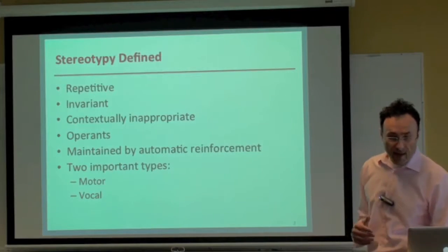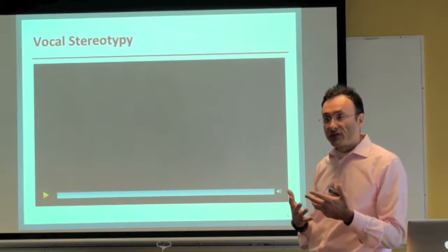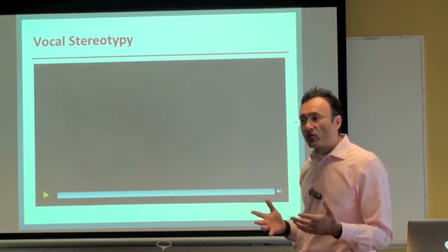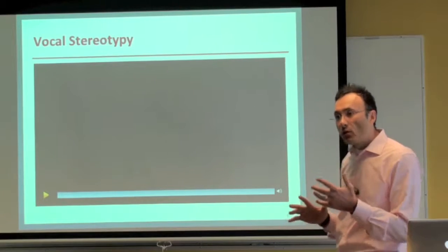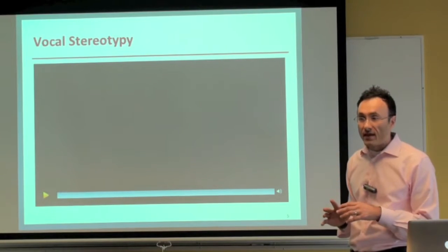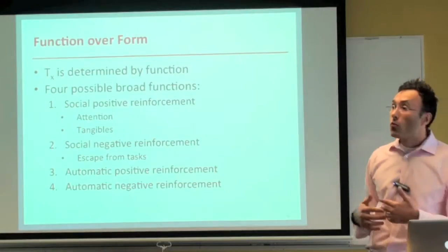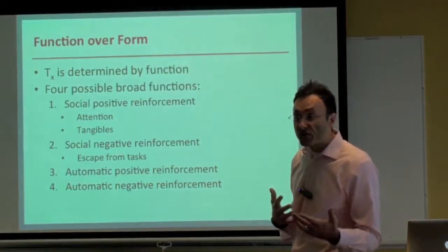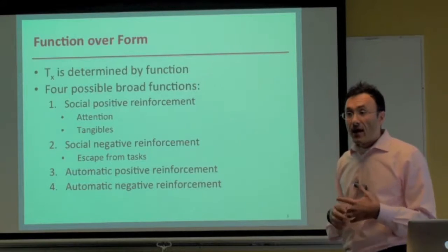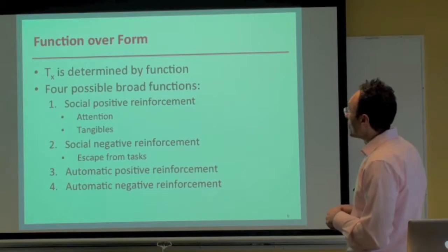The form or topography of stereotypy is often very different. But in the behavioral sciences, we don't so much address form as much as we address function. We give precedence to function over form, and treatment is best influenced by function more so than form.